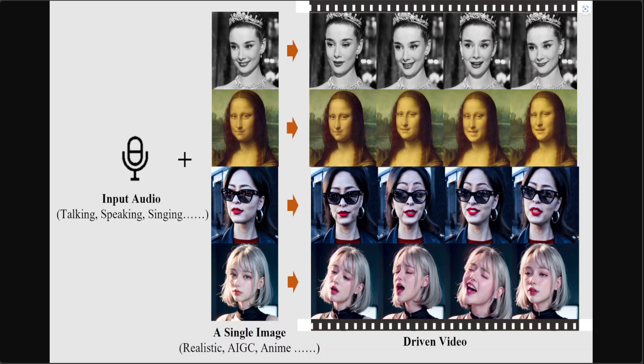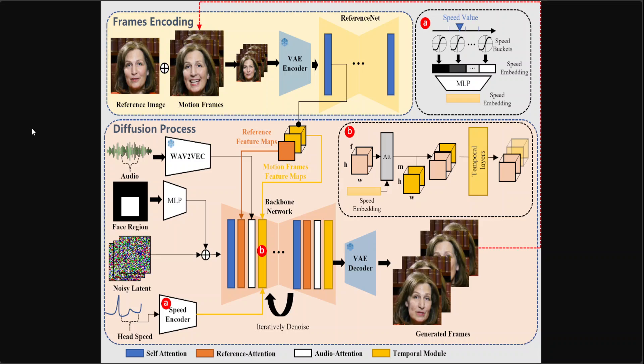The method they are following is also quite interesting. This framework is mainly constituted with two stages. In the initial stage, termed frames encoding, the reference net is deployed to extract features from the reference image and motion frames. Subsequently, during the diffusion process stage, a pre-trained audio encoder processes the audio embedding. The facial region mask is integrated with multi-frame noise to govern the generation of facial imagery, followed by the backbone network to facilitate the denoising operation. Within the backbone network, two forms of attention mechanisms are applied: reference attention and audio attention. These mechanisms are essential for preserving the character's identity and modulating the character's movements respectively. Additionally, temporal modules are utilized to manipulate the temporal dimension and adjust the velocity of motion.